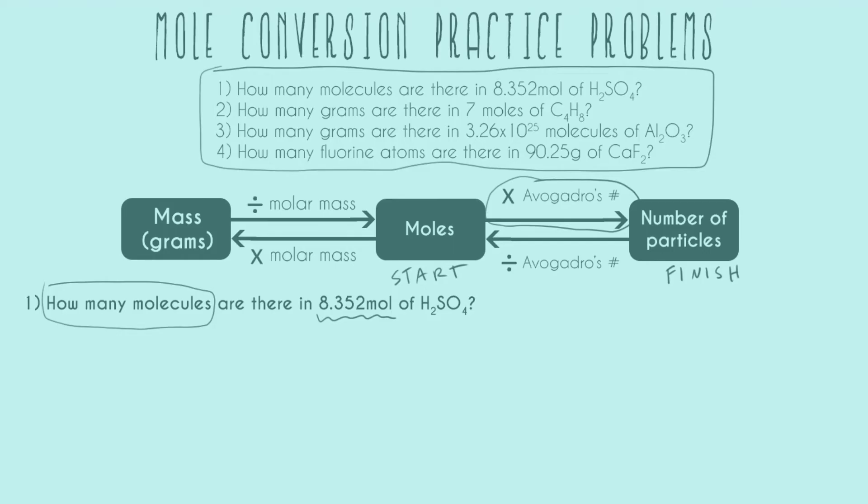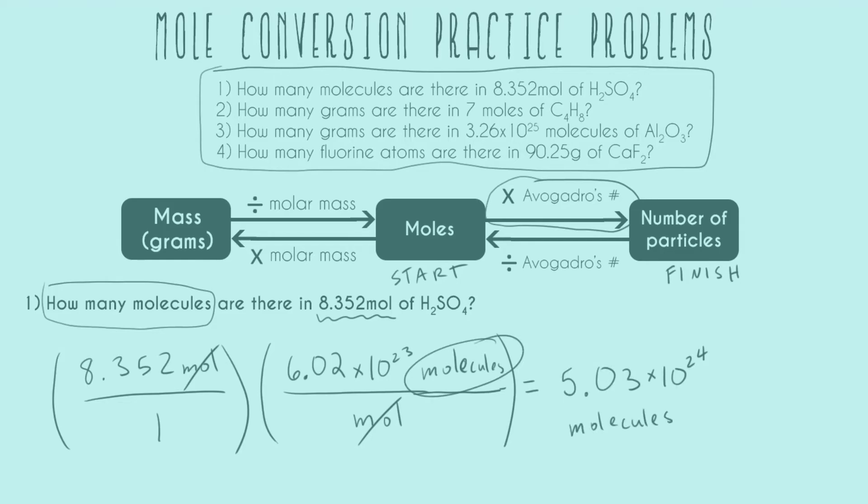Setting up my number of moles and setting up Avogadro's number. We always want to use units for Avogadro's number. The units are always going to be the number of particles per mole, and in this case molecules are particles. Now canceling out and multiplying.